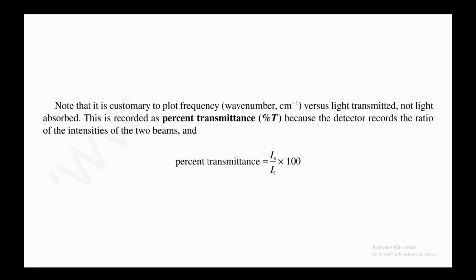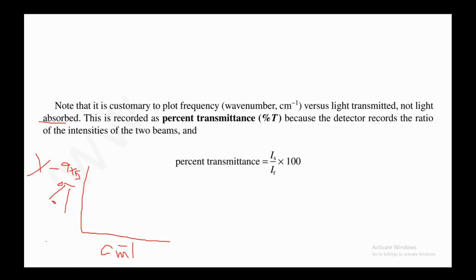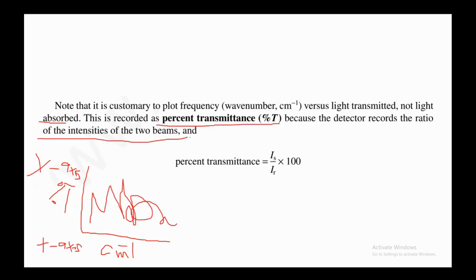Note that it is customary to plot frequency (wavenumber, in units of per centimeter) on the x-axis versus percent transmittance on the y-axis — not light absorbed. The spectrum is recorded as percent transmittance because the detector records the ratio of the intensities of the two beams.